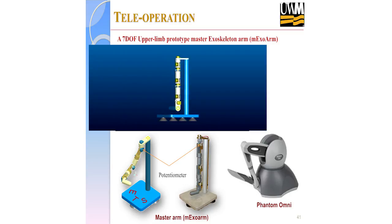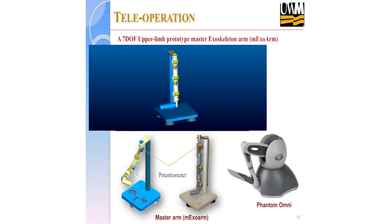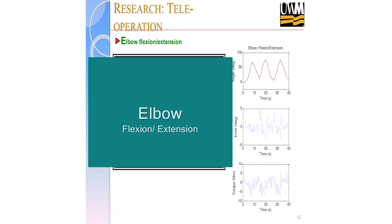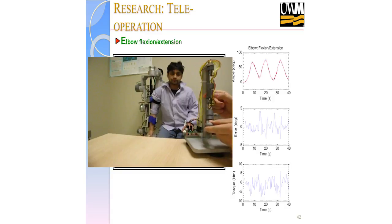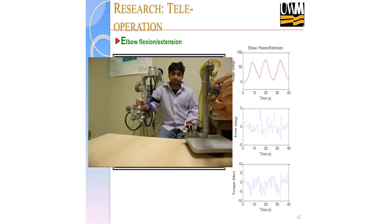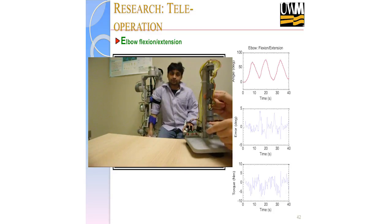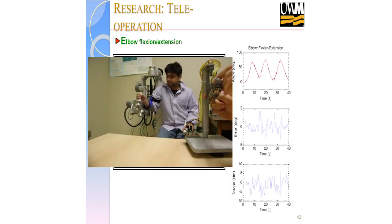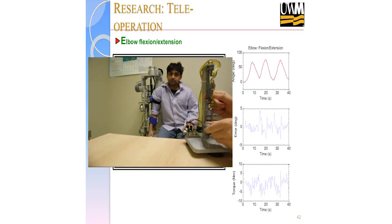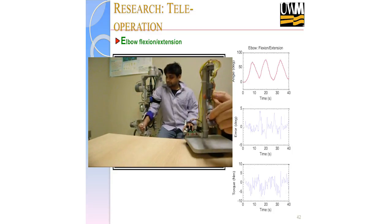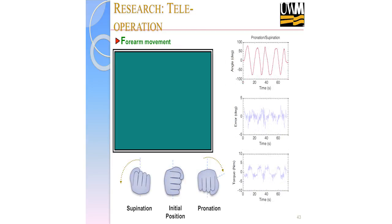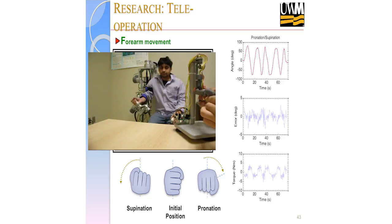We also worked on teleoperation. We thought about how a patient could be in one place while the physiotherapist is somewhere else and still give therapy. We made joysticks to move the robot remotely — for example, elbow flexion-extension. The therapist can drive the robot from a distance, and we made the robot intelligent with force sensors so the therapist can get virtual feedback about whether the patient is in pain. In the future, a clinician sitting in one place can serve many patients without going to different locations.